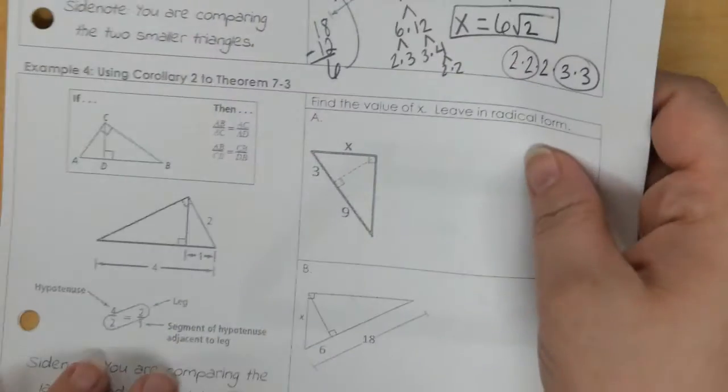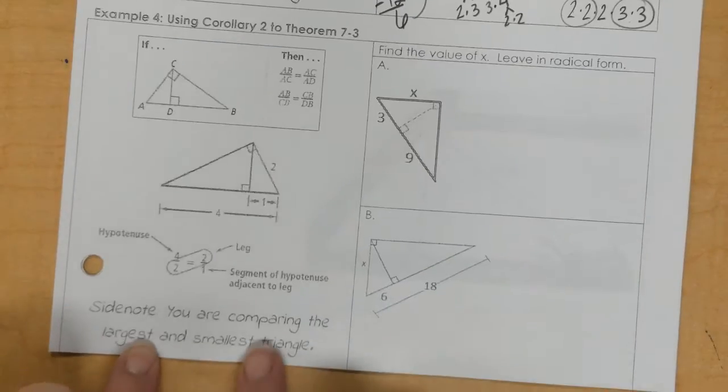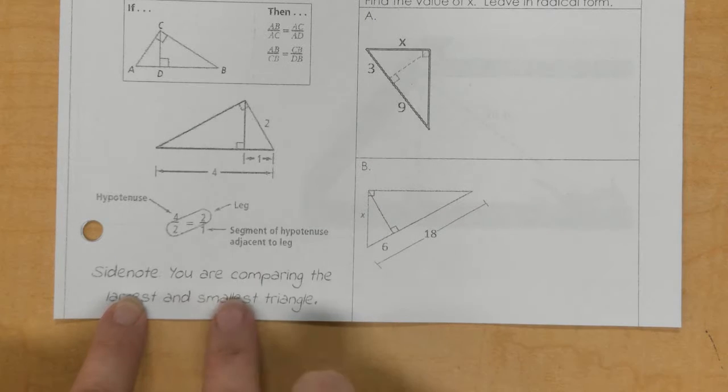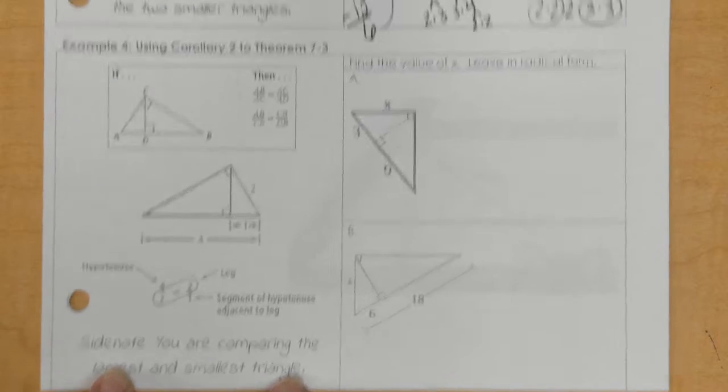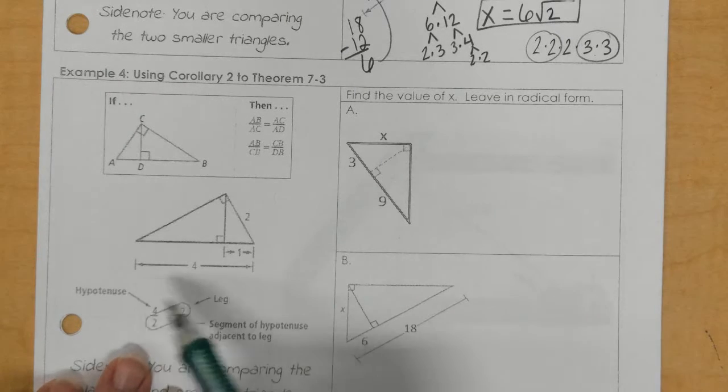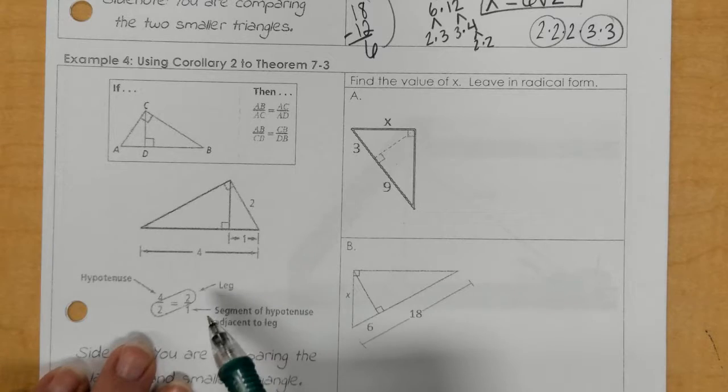For example 4, this one says, side note, you are comparing the largest and the smallest triangles. So, it kind of gives you some hints here of what you're looking for.